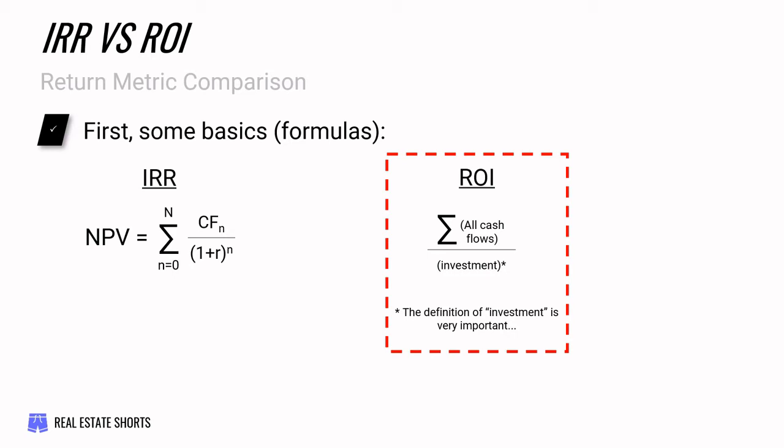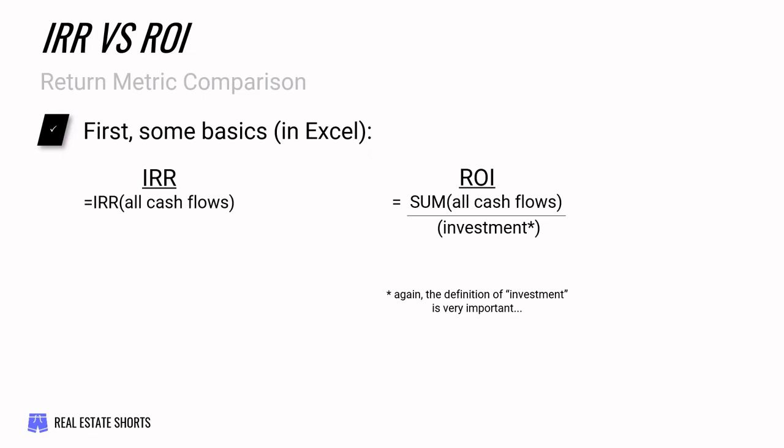Return on investment, on the other hand, doesn't include any of that compounding or discounting. It simply says: take all cash flows, add them, and divide by what you invested. If we were to set this up in Excel, you don't have to worry about the longhand math. Quick sidebar — I'm not a big proponent of not understanding the formula, but for the sake of the video, we can stick to Excel.